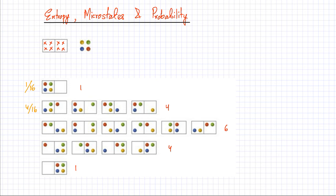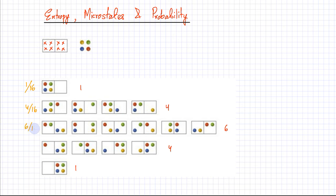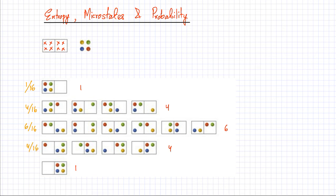Then I calculate the probability of having two particles on the left-hand side and two on the right-hand side. The total number of favorable events is six, so out of sixteen total events, six out of sixteen would give that result. For one particle on the left and three on the right, there are four events that produce that — so it's four out of sixteen. And for all four particles on the right-hand side, there is just one event, so that's one out of sixteen.